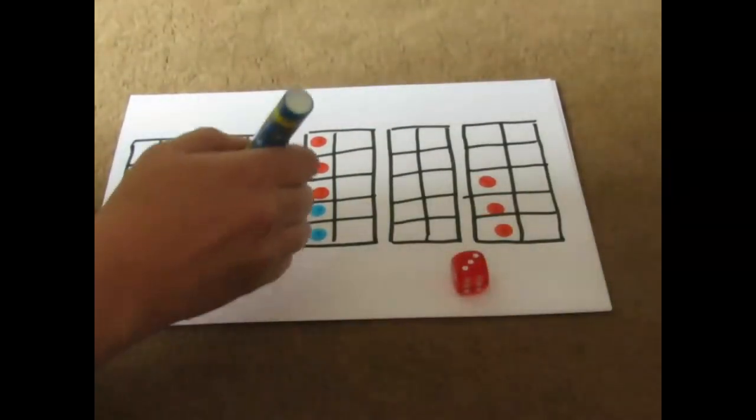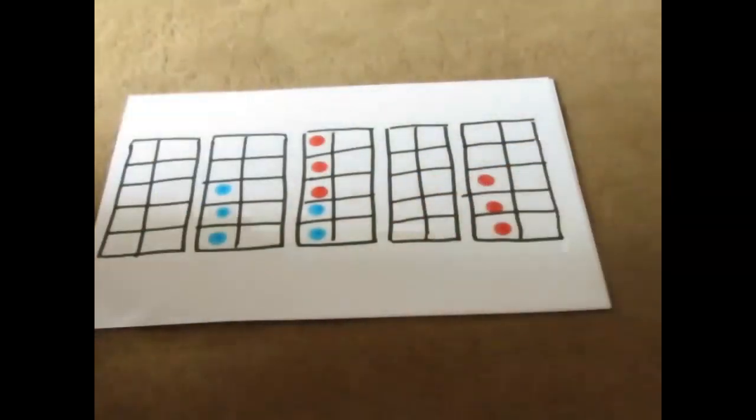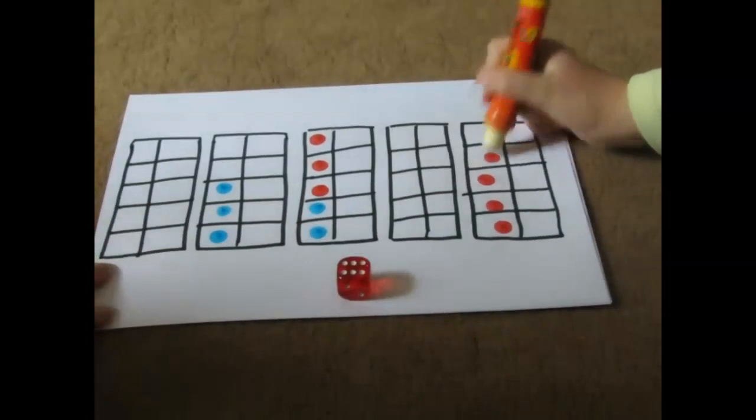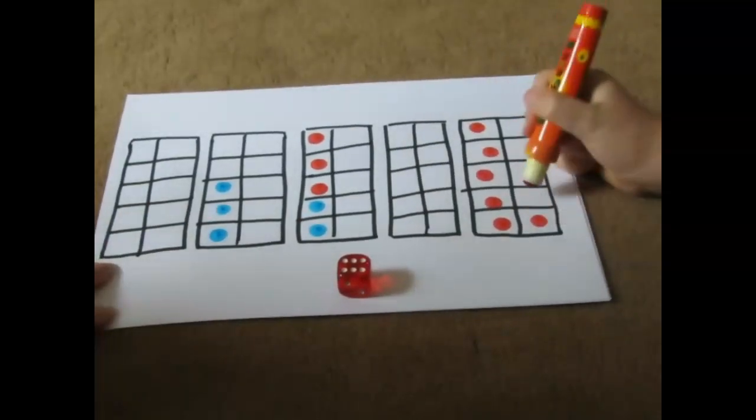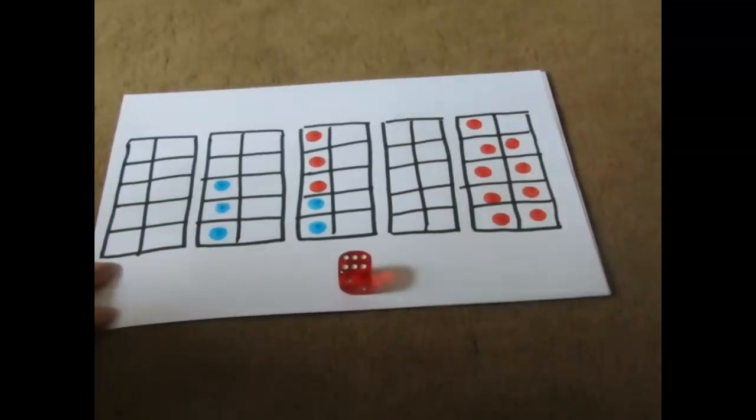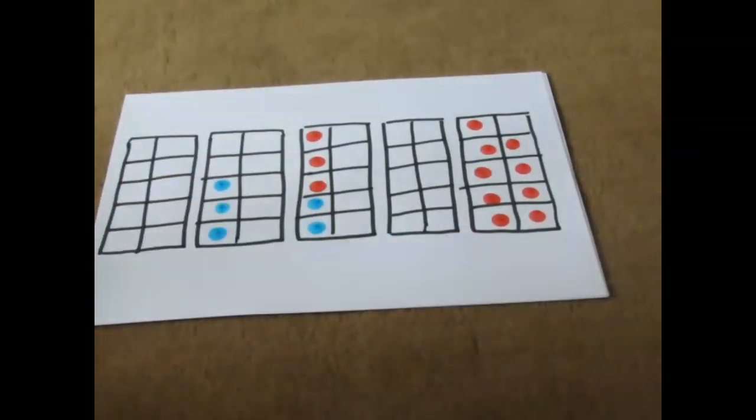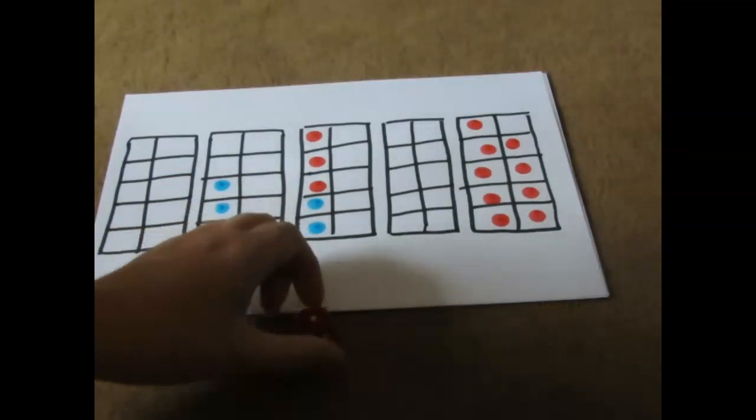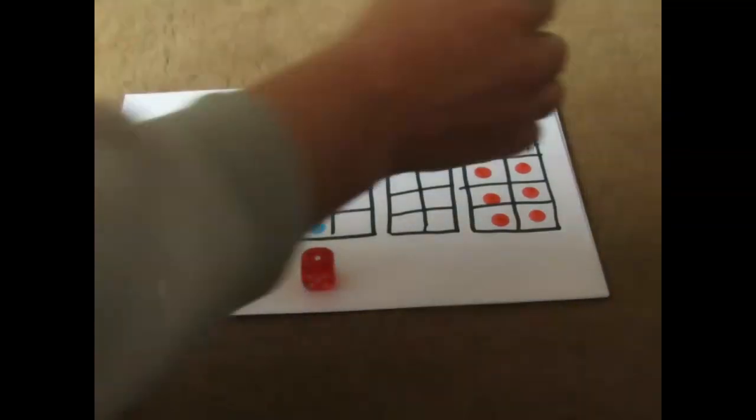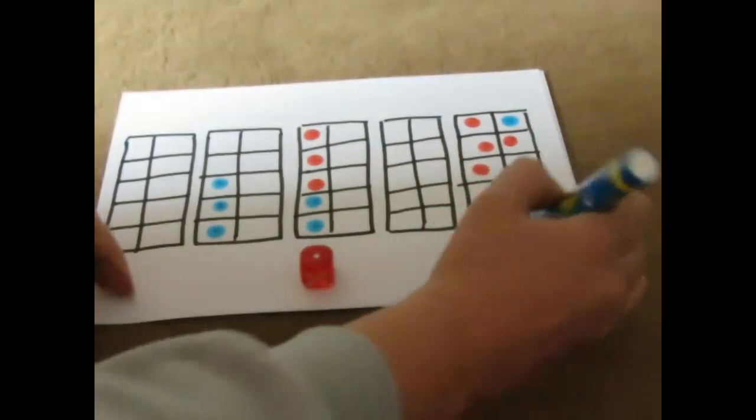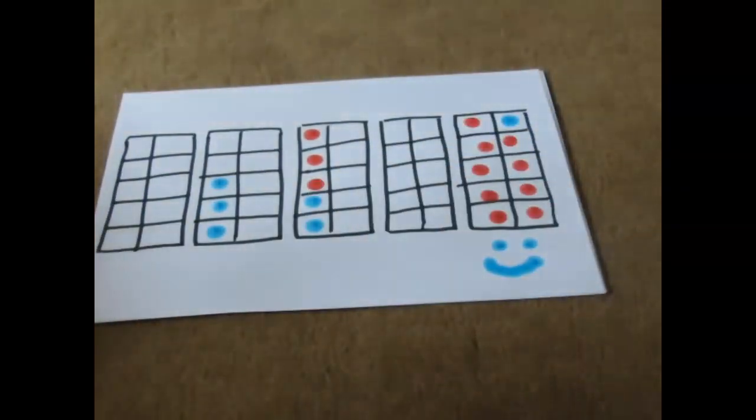So my turn. I've rolled a three as well. So I'm going to go here. One, two, three. You've got a six. Where are you going to put your six? So how many is left in that tens frame? One. One. So if I roll a one I can win that tens frame. Let's see. Yay I've rolled a one. So I can win that one. So that becomes my tens frame now and I'm just going to draw a little smiley face to show that I've won that one.